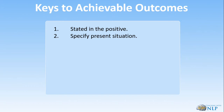Number two: we ask the client where are you now — what's the present situation? In NLP there are two terms: associated and dissociated. Associated is when you are looking through your own eyes. Dissociated is when you see yourself in the picture, like a fly on the wall watching yourself. We want the client to be associated — to really tell us what things are like right now in relation to their outcome.